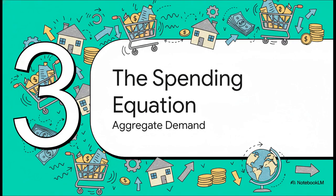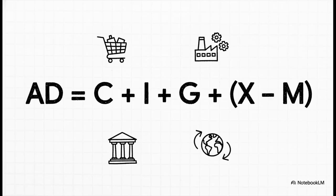Section three: the spending equation. Let's start with the first big piece of our map: aggregate demand. In simple terms, this is just the total demand for everything produced in an economy — it's really the engine of all the spending. And all of that spending gets boiled down to this one super powerful equation. Each one of these letters represents a huge driver of the economy. Let's break them down one by one.